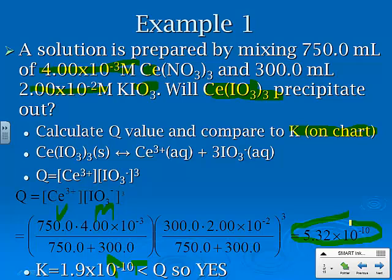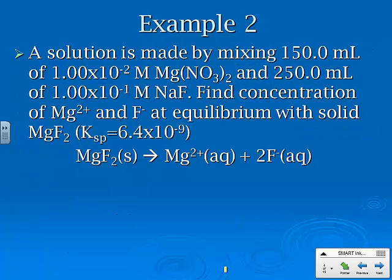Now, what we then have to do is go find the K value. K is only equal to 1.9 times 10 to the negative second. It is less than Q, or Q is greater than K. So the answer is yes, it will precipitate out until equilibrium is reached.